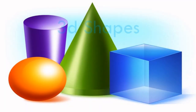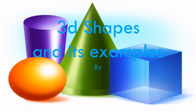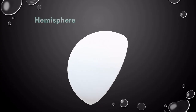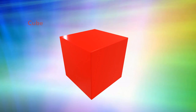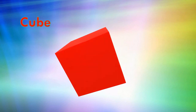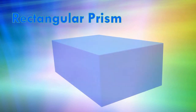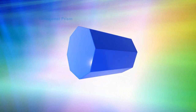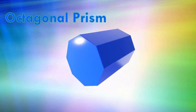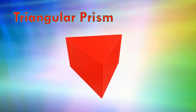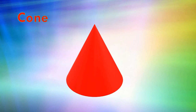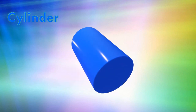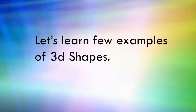3D shapes and its examples by Little Kids Learning. Sphere, hemisphere, cube, rectangular prism, hexagonal prism, octagonal prism, triangular prism, cone, pyramid, cylinder. Let's learn a few examples of 3D shapes.